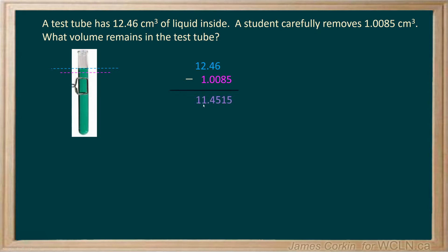So if you put this into a calculator you get 11.4515, but you do need to remember that in science all numbers are estimates so we need to round this off to the correct number of significant figures.